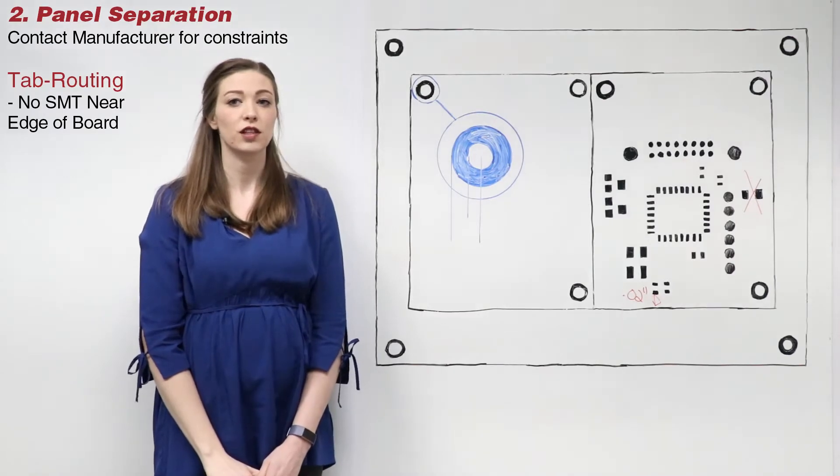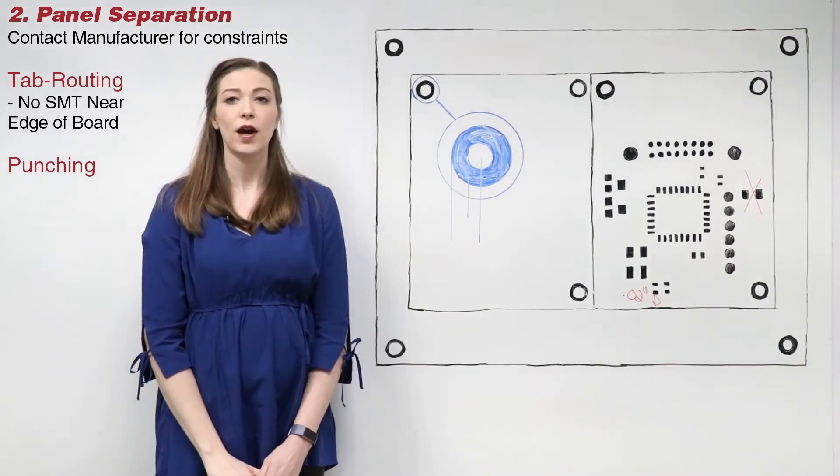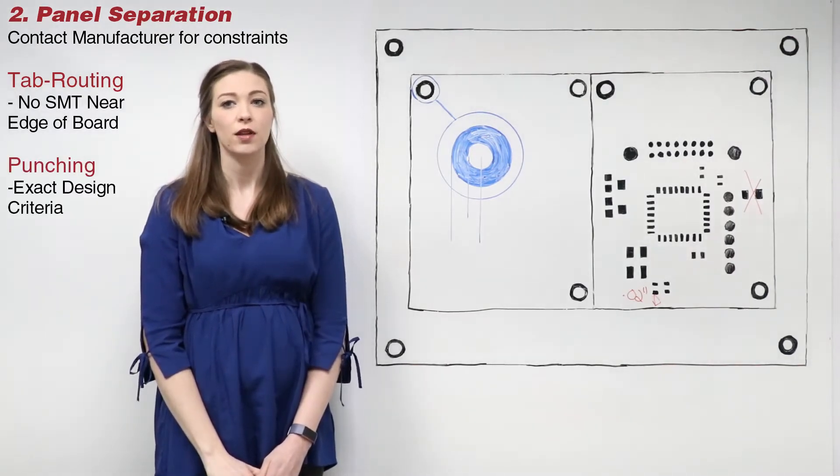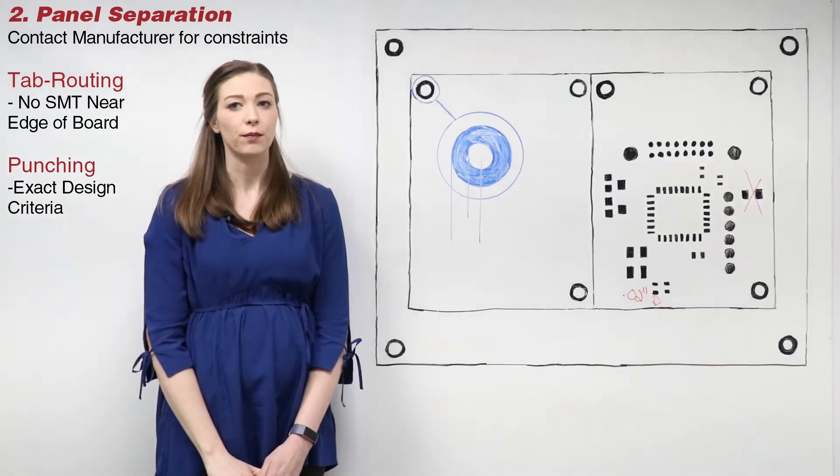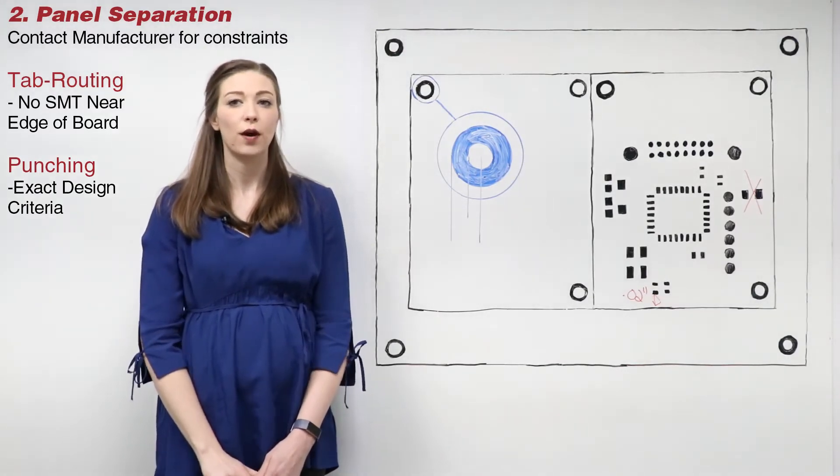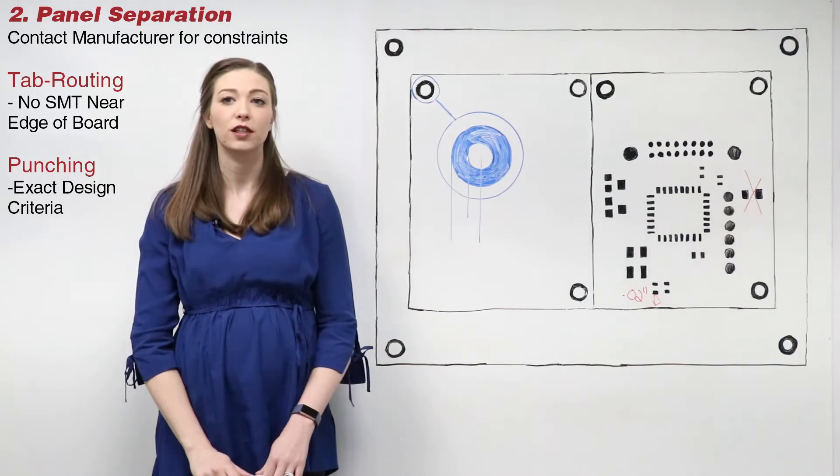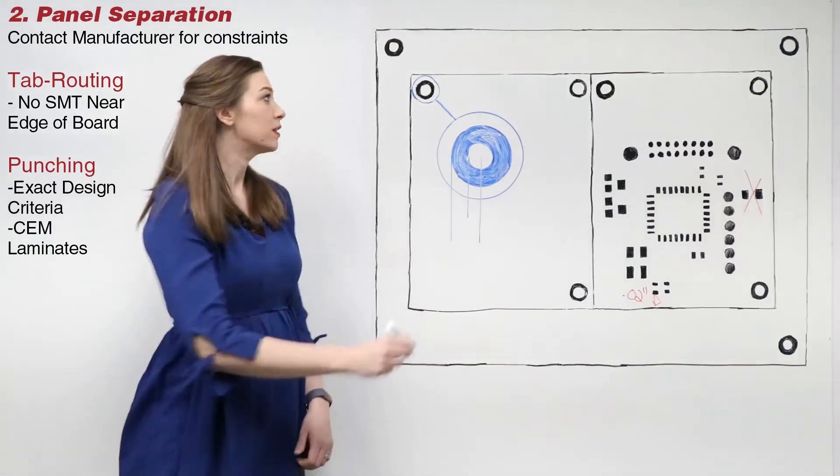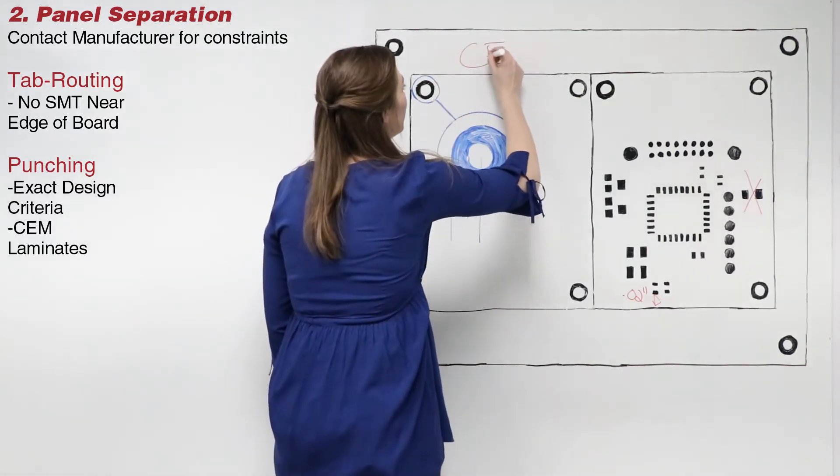Or, if your manufacturer is using the punching process, this requires exact design criteria for the machinery to function properly. This process also requires non-glass and non-fibrous material to be used for the laminate. The CEM family of laminates should be used.